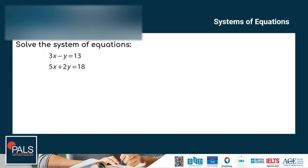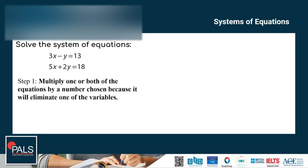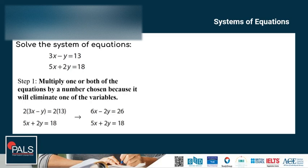Let's try using an example. We have two equations. Equation 1: 3x minus y is equal to 13. Equation 2: 5x plus 2y is equal to 18. For Step 1, I want to eliminate y, so I'm going to multiply the first equation by 2. That gives me 6x minus 2y is equal to 26. Equation 2 remains the same: 5x plus 2y is equal to 18.